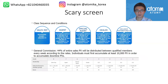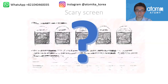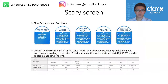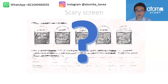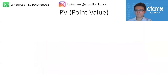Let's take a look at this screen — you can find it in the marketing plan section on the official website. At first it can be really complicated and confusing. We'll try to break it down in small pieces, because when you look at it for the first time it can seem overwhelming.